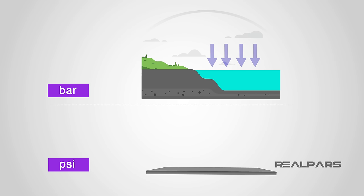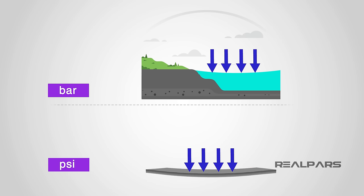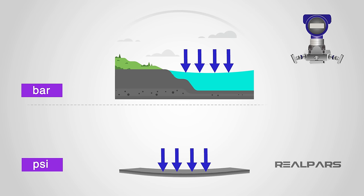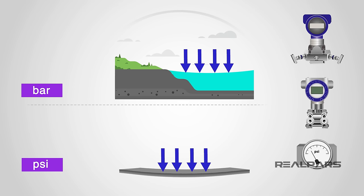The most commonly used measurements of pressure in an industrial fluid and gas processing environment are bar and PSI. One bar is the equivalent of the Earth's atmosphere at mean sea level. A pound per square inch is the force of one pound on an area of one square inch.